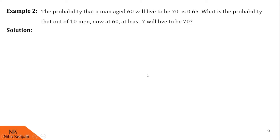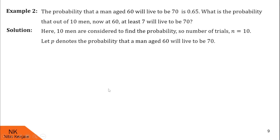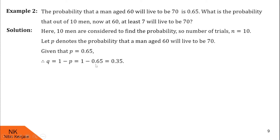Let us look at the solution. We are given that there are 10 men in consideration, so the number of trials n is 10. Given that the probability a man aged 60 will live to be 70 is 0.65, we let p denote this probability, so p = 0.65 — this is the probability of success. Therefore, the probability of failure q = 1 minus p = 1 minus 0.65 = 0.35.